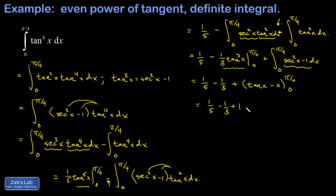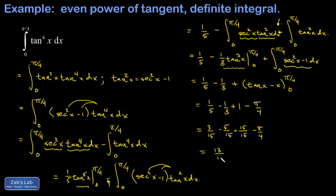Cleaning things up, I get a common denominator of 15 for all these fractions: 3/15 − 5/15 + 15/15 − π/4, and that adds up to 13/15 minus π/4, and we're done.